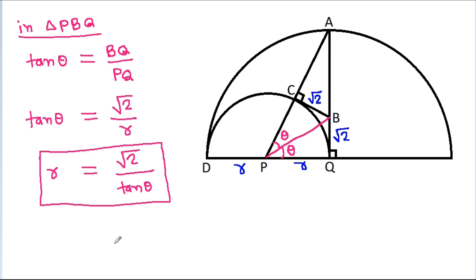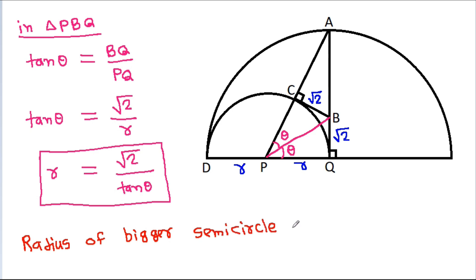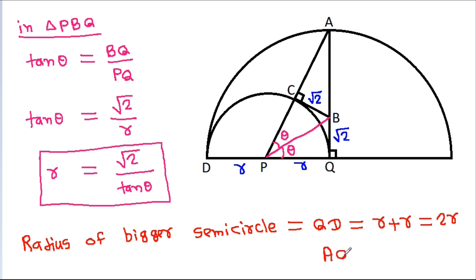The radius of the bigger semicircle equals QD, which is r plus r, giving 2r. So AQ equals 2r.